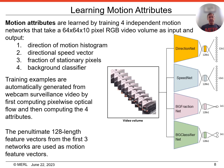The other high-level attributes our system uses are different types of motion attributes. The motion attributes are learned by training four independent motion networks that take a 64 by 64 by 10 pixel RGB video volume as input and output: 1. a direction of motion histogram, 2. a directional speed vector, 3. the fraction of stationary pixels, which is inversely proportional to the size of the moving objects, and 4. a background classifier. Training examples are automatically generated from webcam surveillance video by first computing pixel-wise optical flow and then computing the four attributes. Simple 3D convolutional architectures are used for each motion network. The penultimate 128-length feature vectors from the first three networks are used as motion feature vectors.